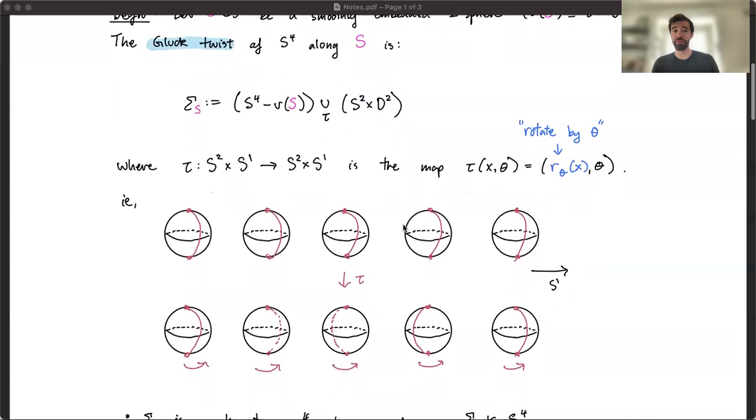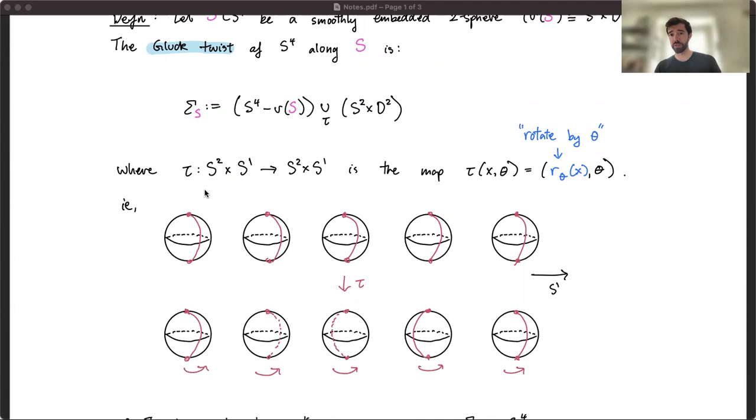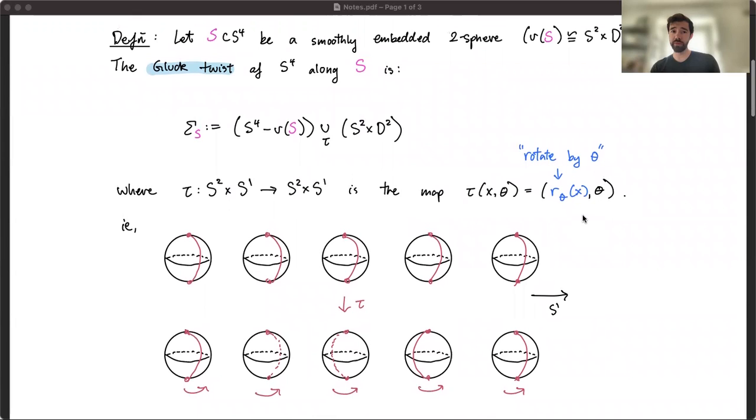And my favorite automorphism of S² × S¹ is this map tau here, sometimes called the Gluck Twist. What do you do? Well, as you walk around the S¹ direction, you rotate the 2-sphere all the way through 360 degrees to get back to where you came from. And so that's some non-trivial automorphism. You can cut out a tubular neighborhood and re-glue it with a twist.